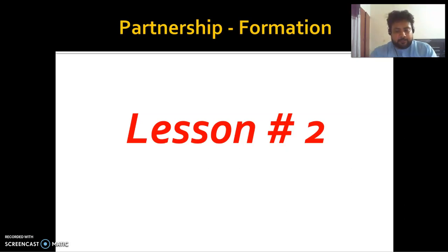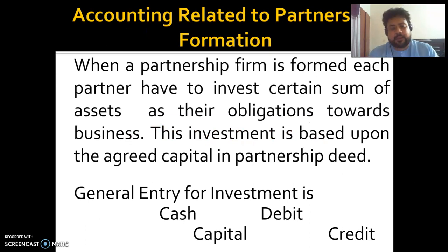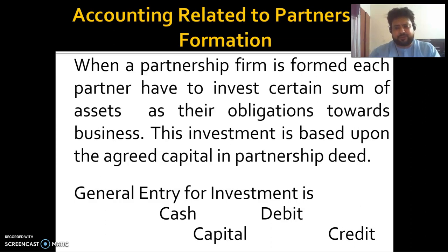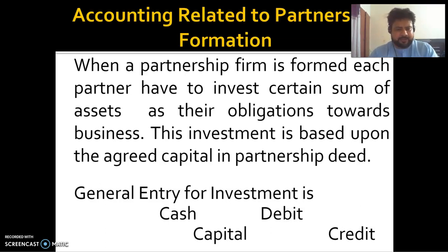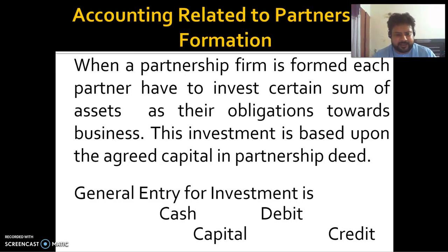Now let's start with lesson number 2. When partners invest in the business, they make an entry. In a sole proprietorship journal, we saw the owner making an investment in cash and assets. In a partnership firm, each partner must invest a certain sum of assets as their obligation toward the business. The investment is based on the agreed capital in the partnership deed. If partners are equal, all partners make equal investments; otherwise, investment is ratio-wise.